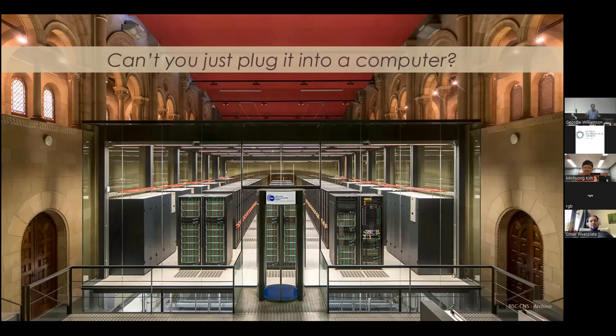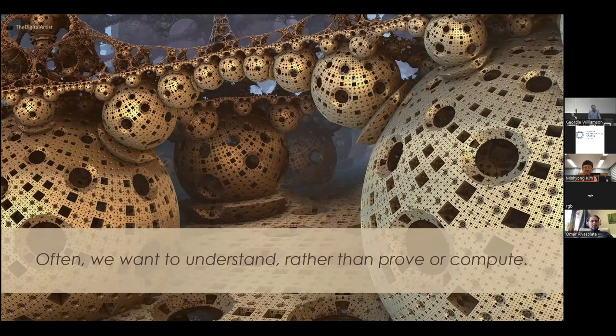So there's very simple search problems which computers just cannot do because our computers are nowhere near big enough. And one of the things that's very interesting in machine learning is it may offer a possibility to search much more effectively in many situations. This is another very important point, which is that mathematicians want to understand often rather than prove or compute. So there's another conception of mathematics that it's all about kind of theorem and proof. And there's a very famous article of Thurston, which I'll quote from in a second, which emphasizes that the primary goal of mathematicians is to produce understanding for other mathematicians. A very interesting point of view.